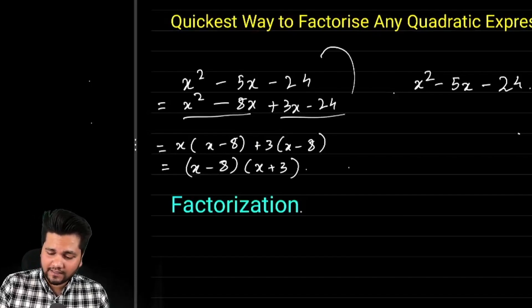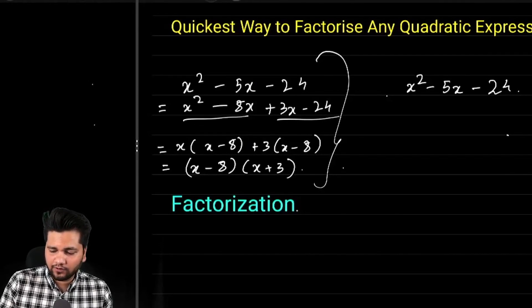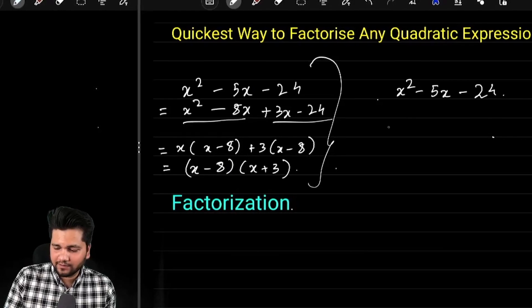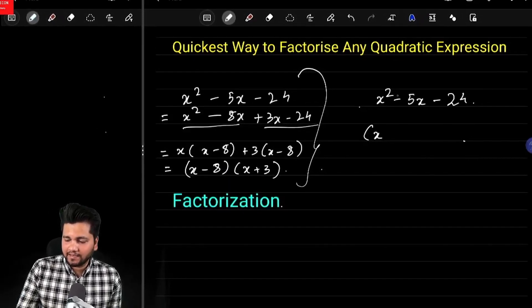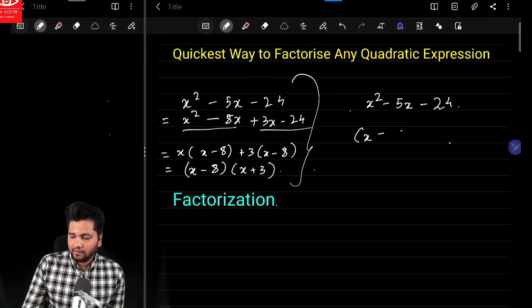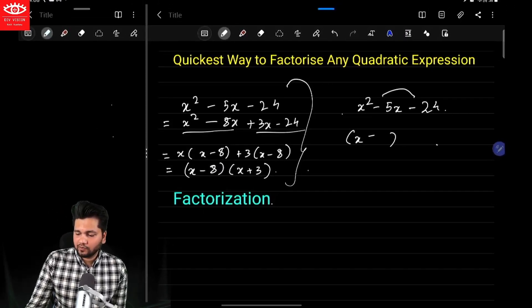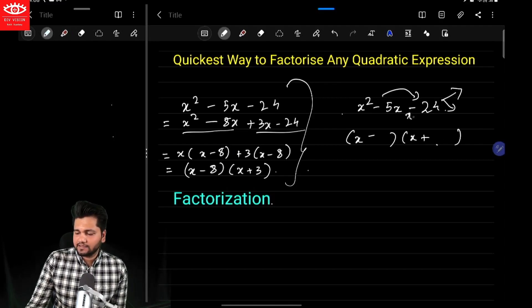Instead of doing all these steps to factorize this expression, what we can do is simply write this as x minus, minus into minus, x plus. Factorize 24 in such a way whose difference is 5. So what are the factors? It's 8 and 3. So my answer is x minus 8, x plus 3.